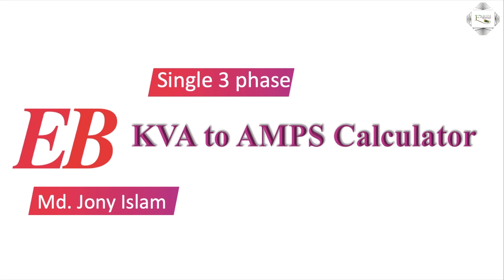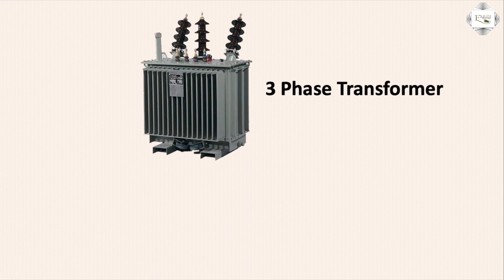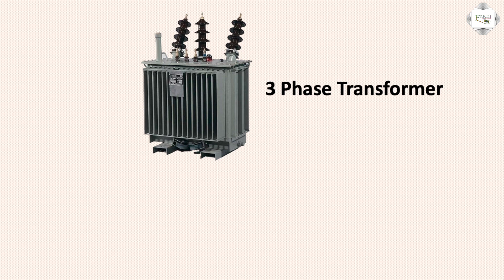Hello viewers, today I will explain the single-phase and three-phase line KVA to ampere calculation. First, three-phase transformer — this transformer is connected in delta connection, meaning three-phase input and three-phase output. Input is three-wire, output is four-wire: input red, yellow, blue at 11 KV voltage, and outgoing 440 volts — red, yellow, blue and neutral.